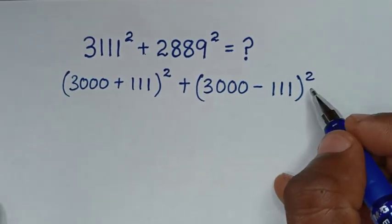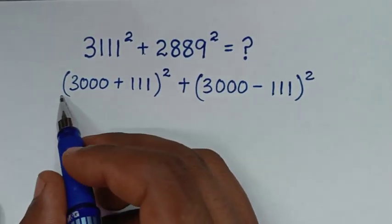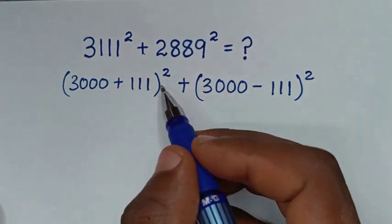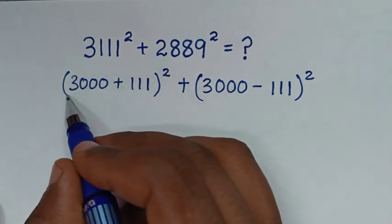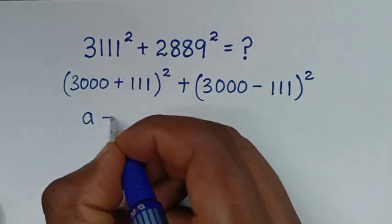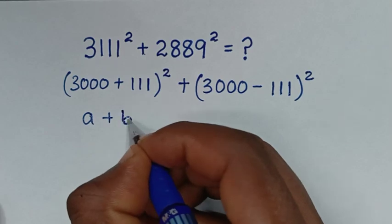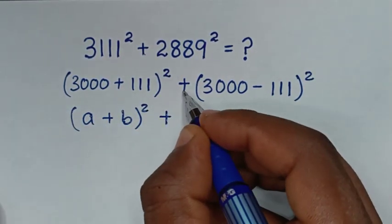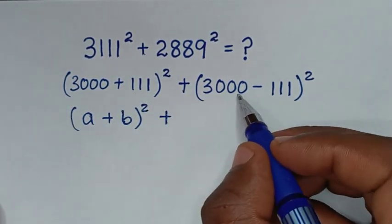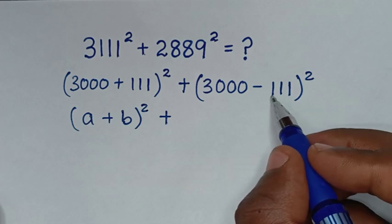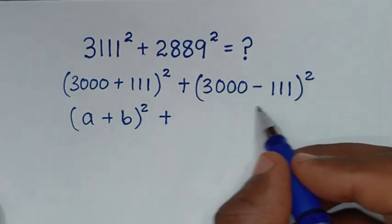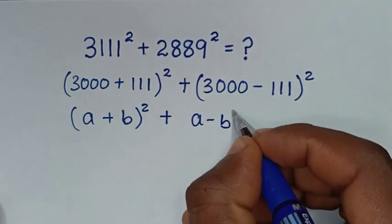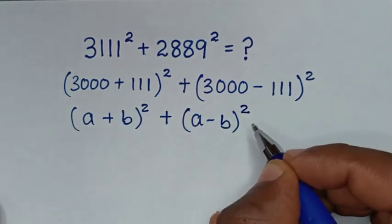Then, in the next step, from this part here, which is (3,000 plus 111) bracket squared — this part is in the form of (a plus b) bracket squared — then plus this part (3,000 minus 111) bracket squared — this part is in the form of (a minus b) bracket squared.